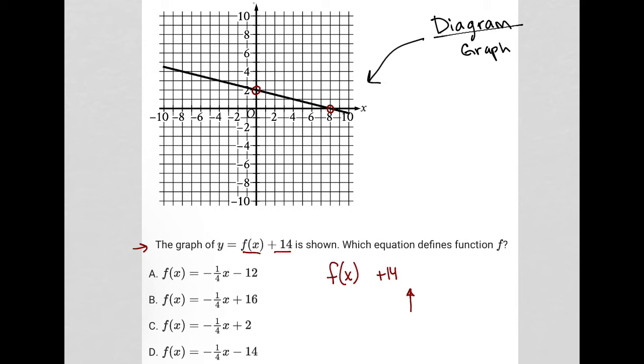So without that 14, which is what this question is asking for, what is f of x? That means that we have to shift this graph down 14 units. So that y-intercept that was at 2, if we were to shift down 14 units, would end up at negative 12. Right, that would be 14 units down.